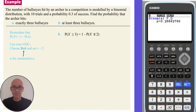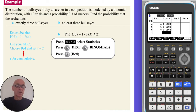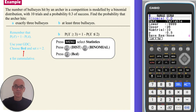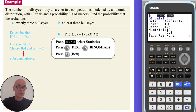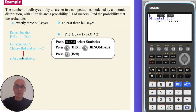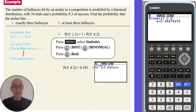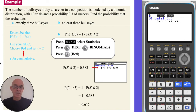Press exit twice to get back to the menu, press F5 for distribution, F5 again for binomial distribution, but this time select F2 for a cumulative calculation. Set x equal to 2 (or on a more recent version, set the lower value to zero successes and the upper value to two successes), press enter, and you'll get the required probability. The probability of hitting at least three bullseyes is found by subtracting this value from one, giving an answer of 0.617.